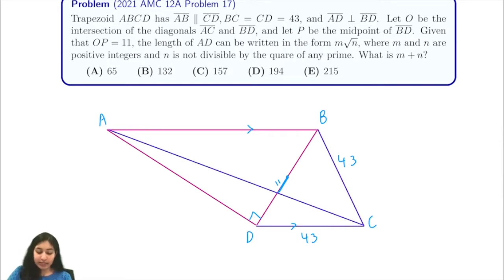We let O be the intersection of the diagonals, which I'm marking here, and P be the midpoint of BD. We are given that OP equals 11, and we're trying to find the length of AD. So I've gone ahead and drawn a diagram and added all of the information that we're given in the problem, and we're going to try and use it to solve.